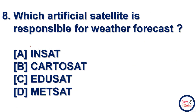Next question: which artificial satellite is responsible for weather forecasting? Options are INSAT, CARTOSAT, EDUSAT, or METSAT. Option D is correct — METSAT, the Meteorological Satellite, is responsible for weather forecasting.